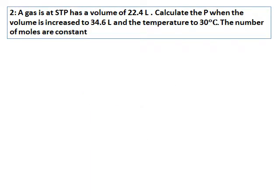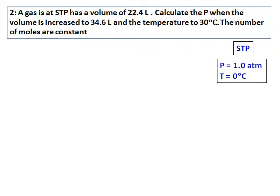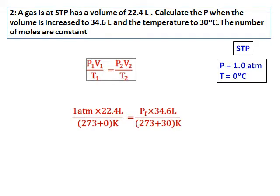Final question: a gas at STP has a volume of 22.4 liters. Calculate the pressure when the volume increases to 34.6 liters and the temperature rises to 30 degrees Celsius, with moles constant. STP means standard temperature and pressure: pressure = 1 atmosphere, temperature = 0 degrees Celsius (273 Kelvin). Since nothing is constant, use the combined gas law P1V1/T1 = P2V2/T2. P1 = 1 atm, V1 = 22.4 L, T1 = 273 K. Convert the final temperature to Kelvin and calculate the final pressure.